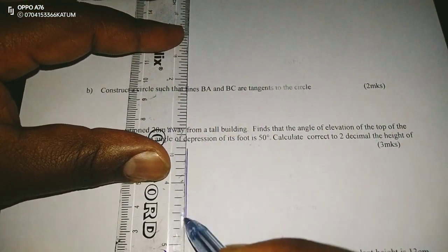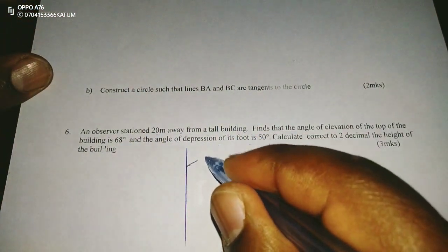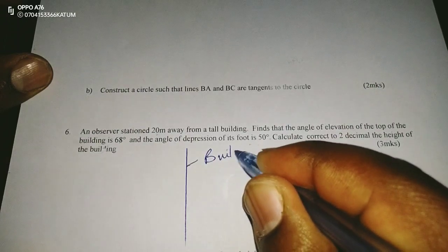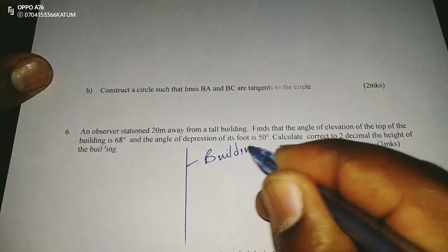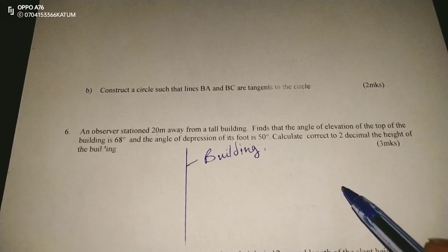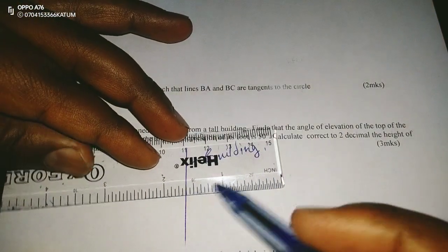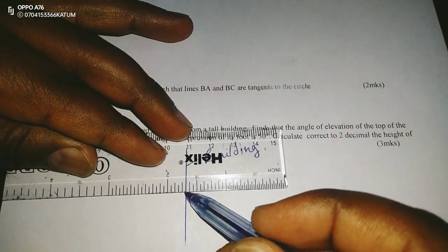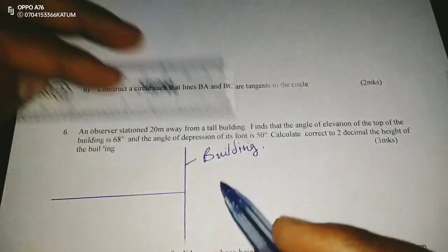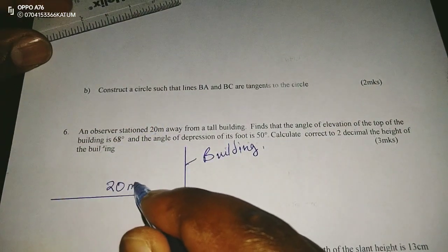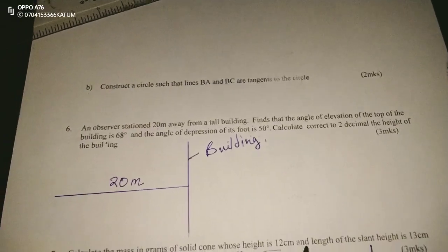Therefore, this can be the building. Now, if this is the building, then we can talk of an observer being somewhere, just at some point,